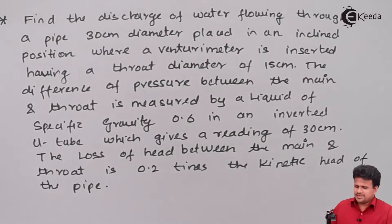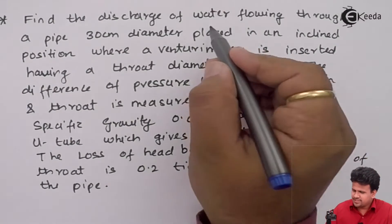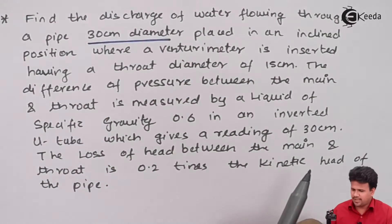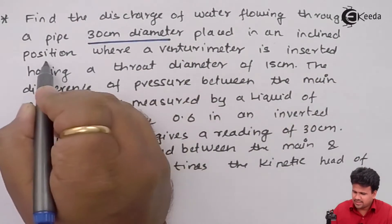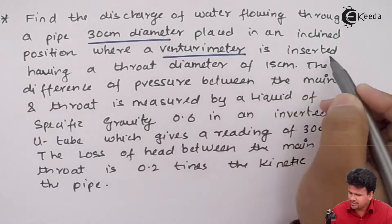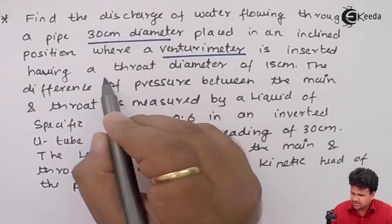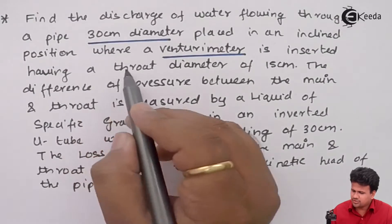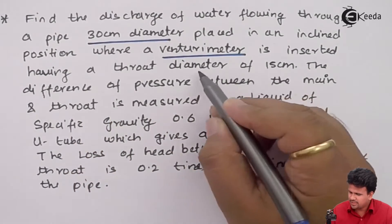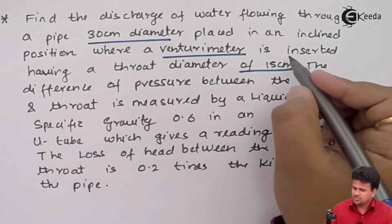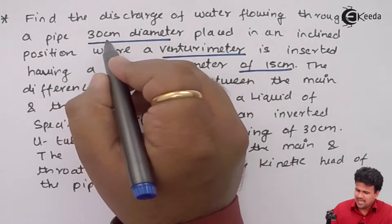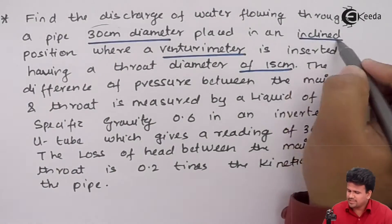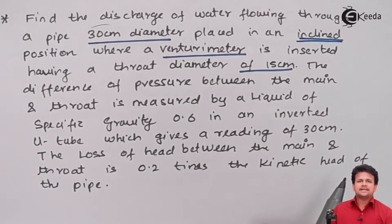The problem states: find the discharge of water flowing through a pipe of 30 centimeter diameter placed in an inclined position. A Venturimeter is inserted having a throat diameter of 15 centimeters. So the throat diameter and the diameter of the pipe are given to us, and importantly, it is inclined.